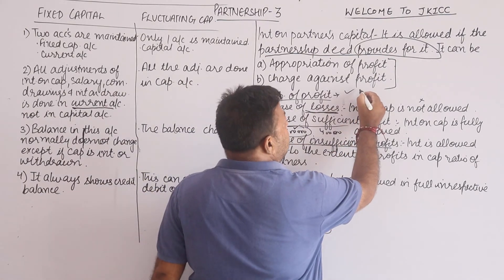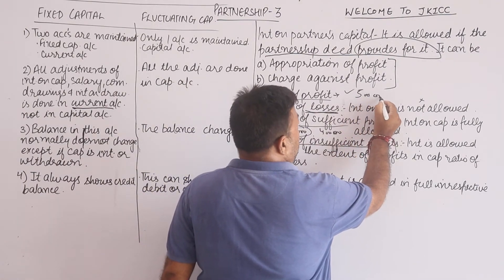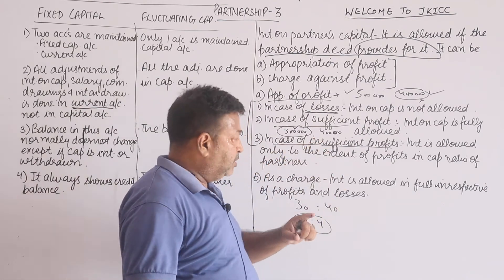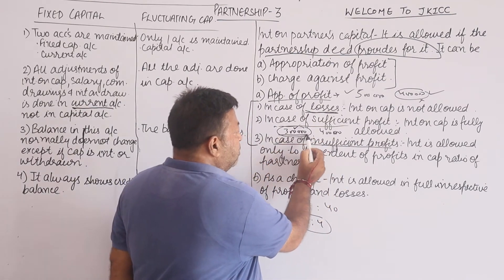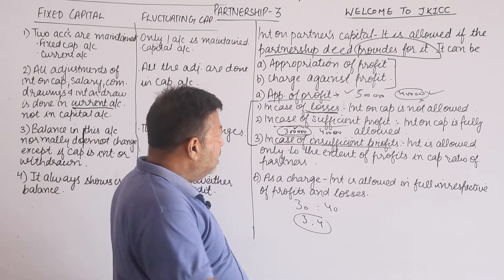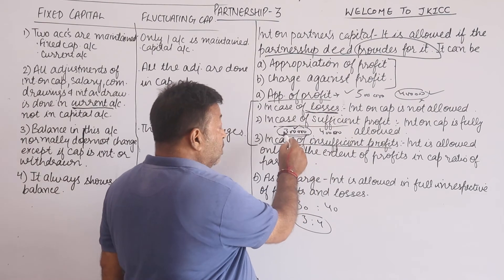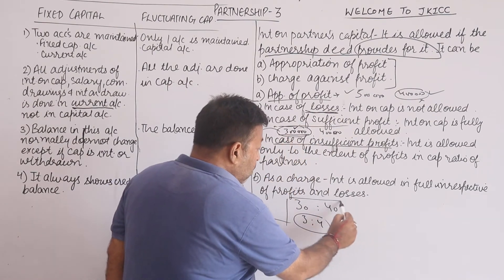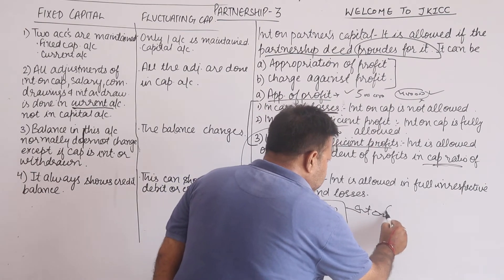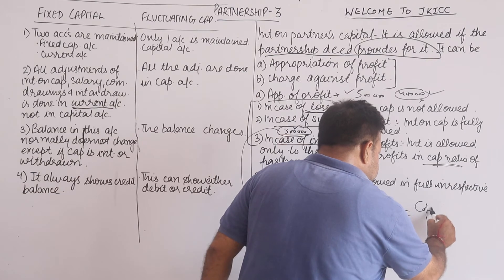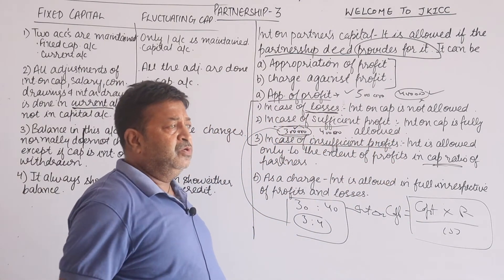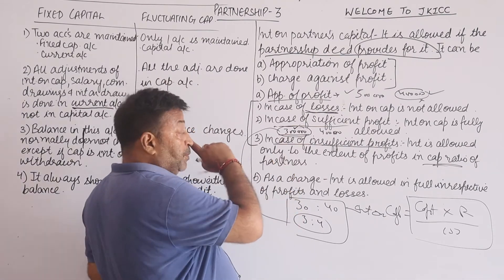If there are sufficient profits — for example, profits are 5 lakhs and interest on capital is 4 lakhs — then the full interest on capital is allowed. The formula for interest on capital is: capital introduced multiplied by the rate, divided by 100. If there are insufficient profits, the available profits are distributed in the capital ratio. That is the appropriation approach.